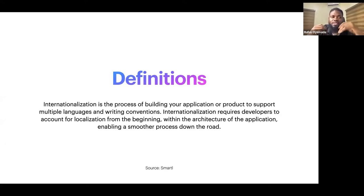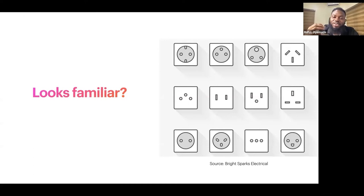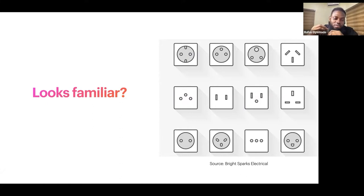Internationalization is something that happens at the point of planning — before the actual engineering of the product starts. It's part of the initial phase of the project when architecture is being planned and mapped out. After all that is done, localization itself is what happens a step after — and that is usually when developers and software engineers come in to actually work on some of these things. What we have on screen is like a wall socket, which I believe you are all familiar with.